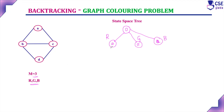Suppose if I am assigning red to vertex A, then B and C are adjacent to A, so red should not be assigned to B and C. For vertex B, assigning red is a dead end because that is the main constraint in graph coloring problem — no two adjacent vertices should be of the same color. The adjacent vertices should be assigned with different colors. That is the important logic in graph coloring problem.